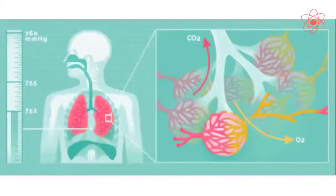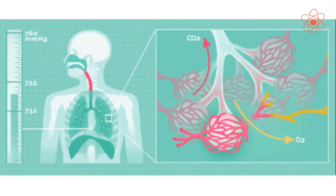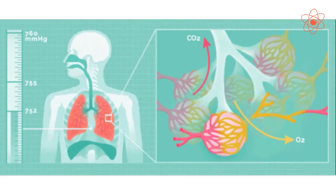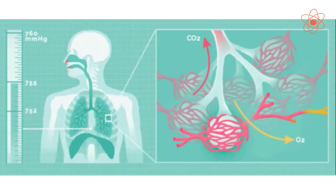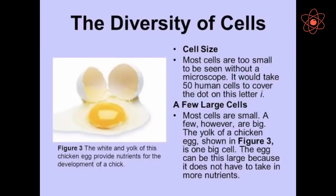While cells present in the lungs specialize to carry out the respiration process. Do you know, children, the egg of a hen represents a single cell and is big enough to be seen by the unaided eye.